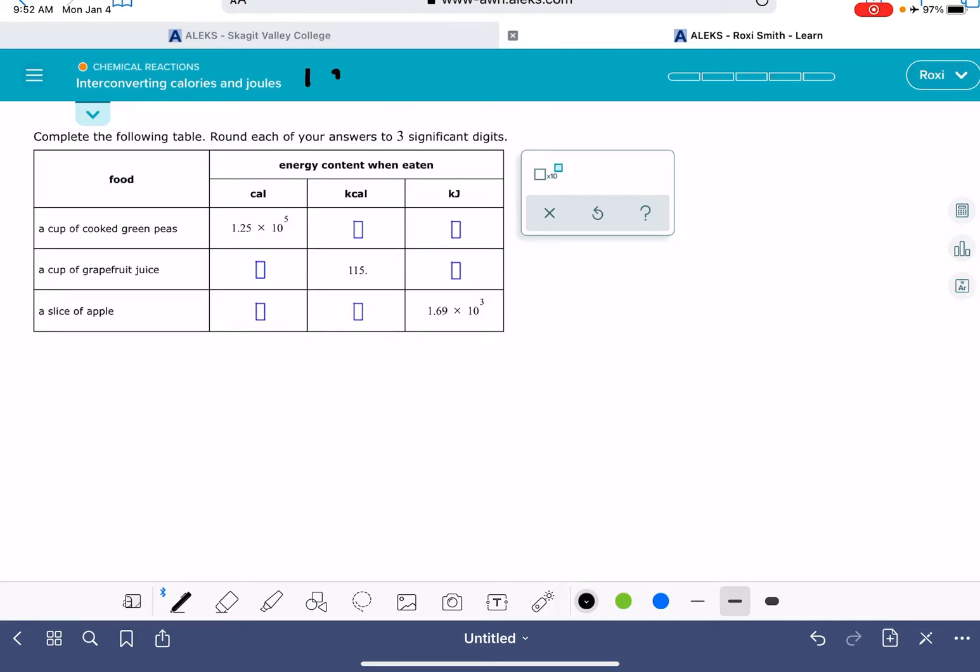Number one, you need to know that one calorie is equal to 4.184 joules. And I do want to point out that this is a calorie with a lowercase c. A calorie with a capital C is something different. You also need to know that one kcal kilocalorie is 1,000 calories. This k kilo is just our metric prefix kilo, which represents 1,000. One kilo of anything is 1,000 of that thing.